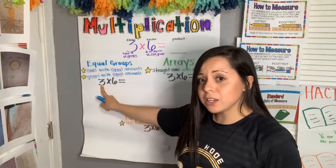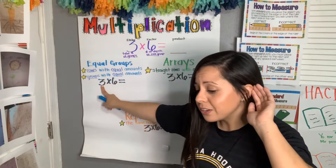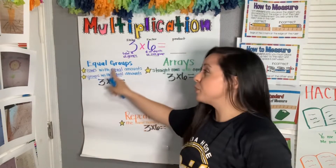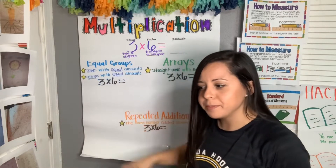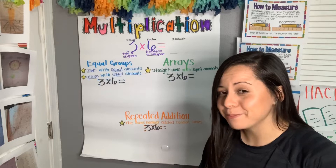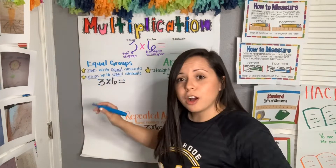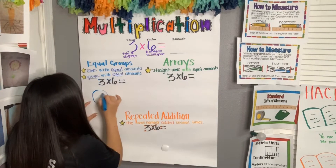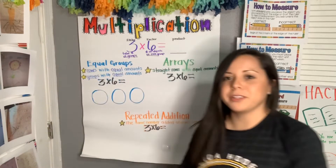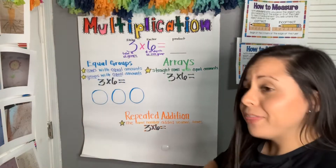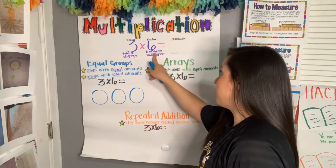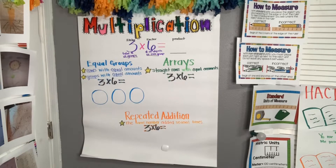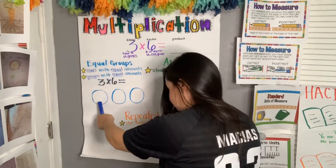The three tells us the total number of groups. So how many groups am I going to draw? Three — because the first factor tells me the total number of groups. So let me draw three groups: one, two, three. I have drawn three groups. Now the second factor, six, tells me the total number of objects inside each group.